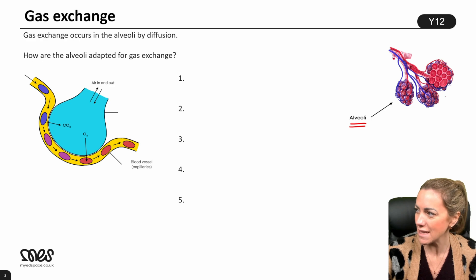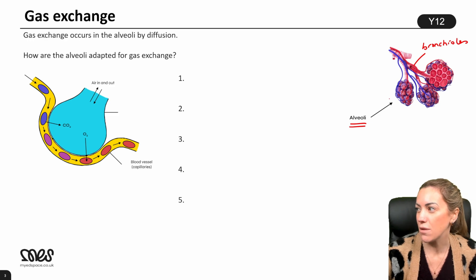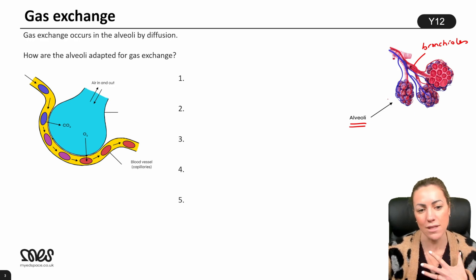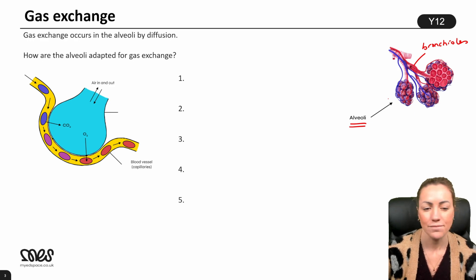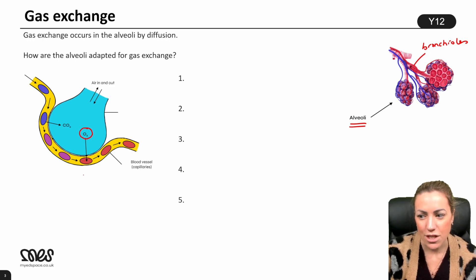Gas exchange itself occurs in the alveoli. We can see many alveoli, one of the smaller bronchioles carrying air into those alveoli, and blood vessels surrounding them. You've got arterioles carrying the blood in, then capillaries surrounding the alveoli — and that's where gas exchange takes place.